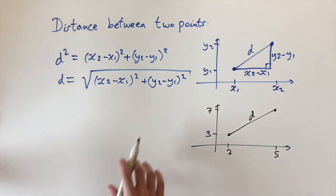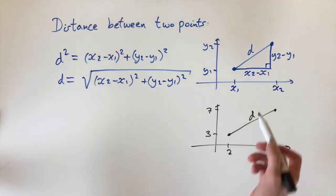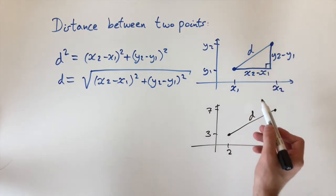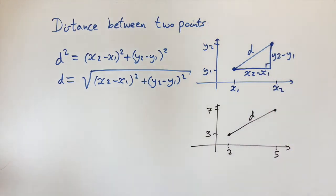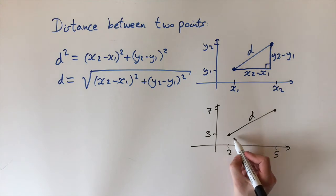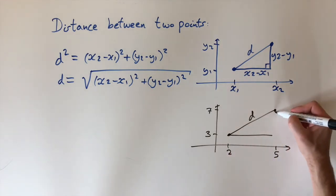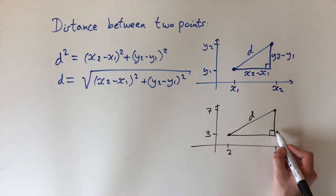So we can essentially just plug in these values into this formula. But if you don't remember this formula, we can just use the same approach. We can make a right-angle triangle and we can use Pythagoras' theorem. So let's just do that. We draw a right-angle triangle like this and it intersects here. This is 90 degrees.